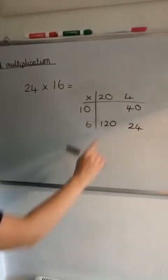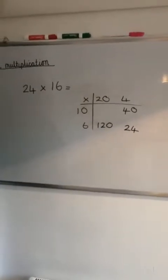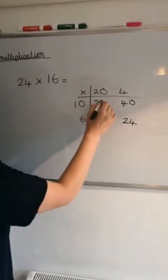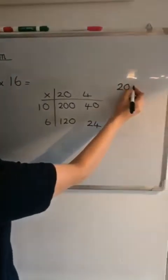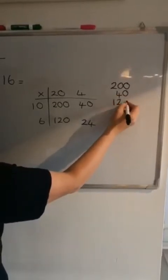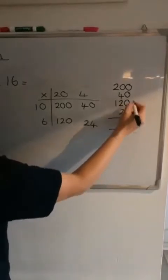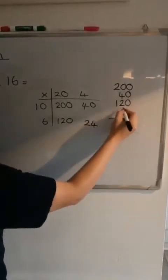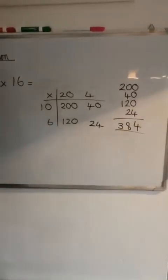And then finally 20 times 10. Well, I know that 20 times 1 would be 20, so 20 times 10 is 200. And then you add all of those up: 200, 40, 120, and 24. And then if you add all of those columns up, you should have had 384 for that question.